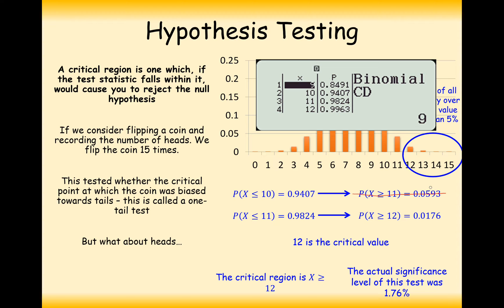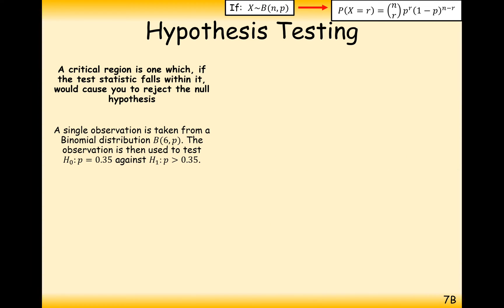So this is how we find the critical values. We use our calculator in binomial CD mode to look for when the probability up to a certain point is less than 5%, or the probability of a certain value or more is less than 5% as well. Generally we're going to use this 5% significance level — it could be 1% or 10%, but it's generally 5%.